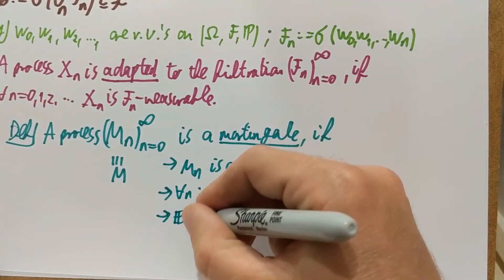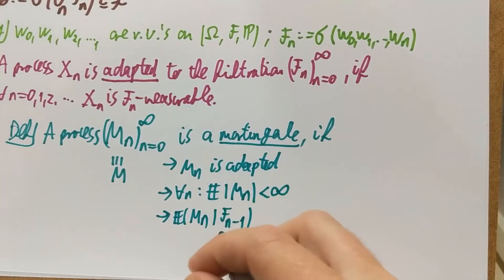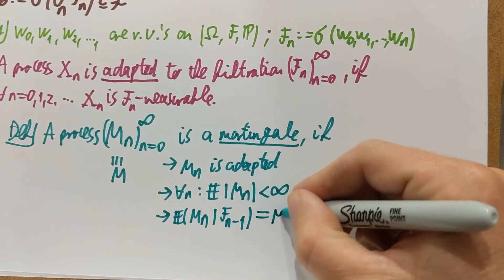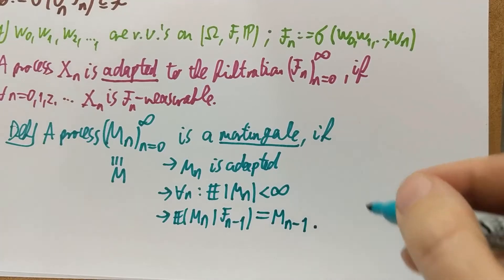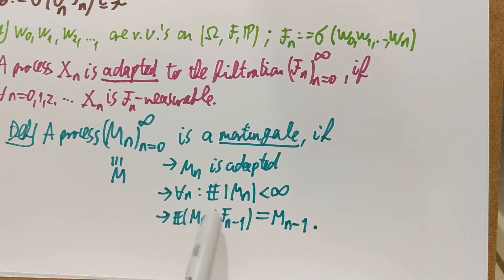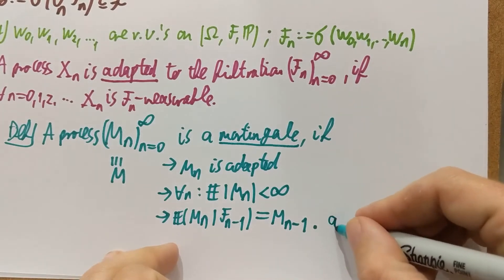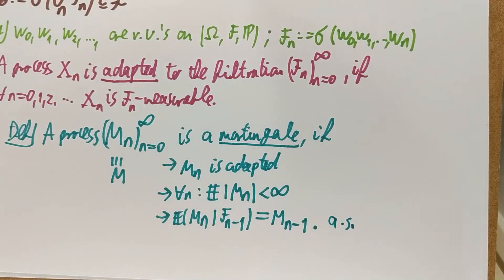And here is the main thing — the martingale property: the conditional expectation of M_n given F_{n-1} equals M_{n-1}, almost surely. M_n is F_n-measurable, and the conditional expectation given F_{n-1} is itself an F_{n-1}-measurable random variable. M_{n-1} is also an F_{n-1}-measurable random variable by definition of being adapted. So we are talking about a martingale when these two random variables are equal. Note that conditional expectations are defined up to zero-measure sets, so we need this property almost surely — not for every ω, but for a probability-one set of ω's.